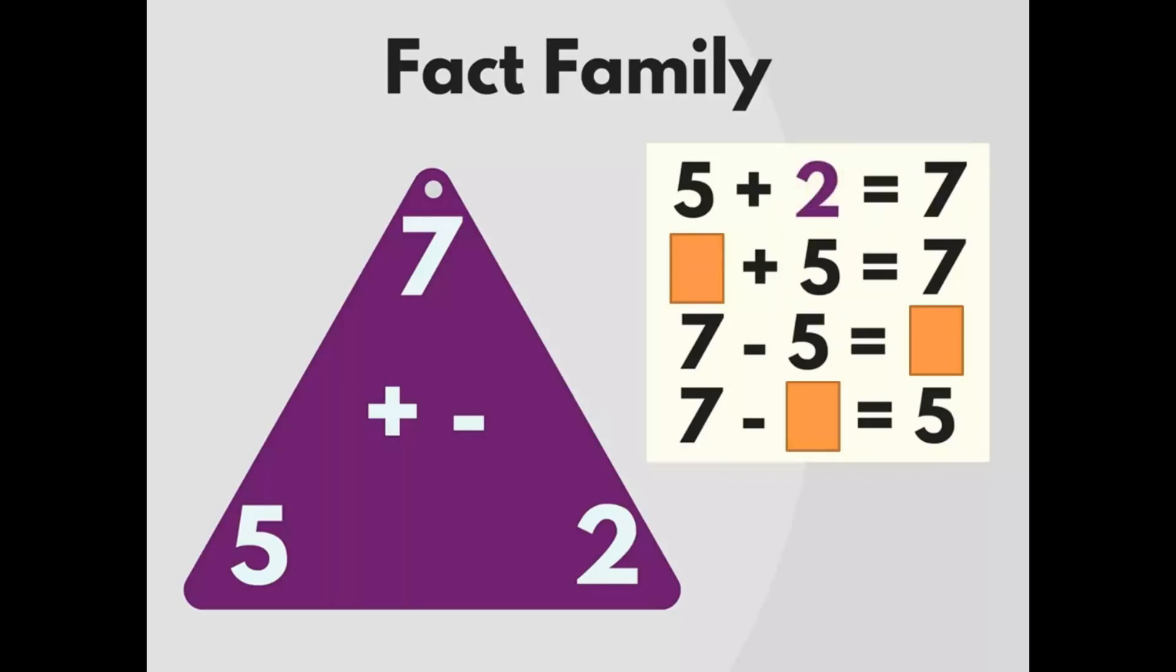5 plus 2 equals 7, 2 plus 5 equals 7, 7 minus 5 equals 2, and finally 7 minus 2 equals 5.